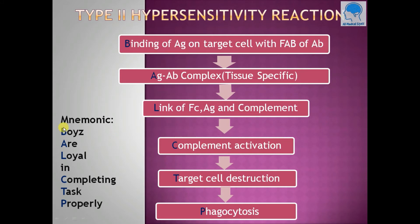Now type 2 hypersensitivity reaction. We can remember all these steps by using a mnemonic: 'BOYS ARE LOYAL IN COMPLETING TASKS PROPERLY.' Here B stands for binding of antigen on target cell with Fab of antibody — antigen-antibody complex, that is tissue specific. L stands for link of Fc antigen and complement, C stands for complement activation.